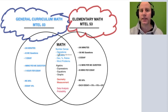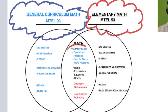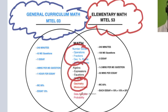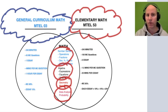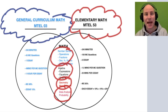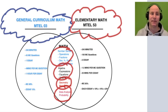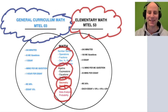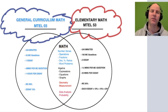There are slight differences in the exam. They both cover number sense, algebra, geometry, probability, and data analysis — that's the core content — but it's broken down in different ways. Has anyone ever taken the 53 before? They cover similar material but there are a lot of differences between them.